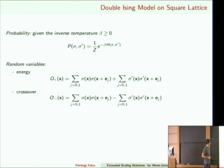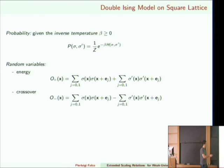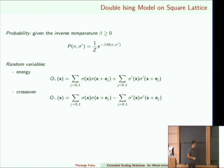Now you have your probabilistic setup and you want to study two random variables in particular. Their typical names are energy and crossover. The energy random variable is the product of spins along the same horizontal and vertical bond summed with sigma prime — it's like the first coupling term without J. The crossover is the same but with a minus sign in between, hence without the J4 term. That's why one is called energy and the other is called crossover.